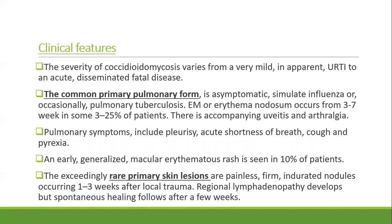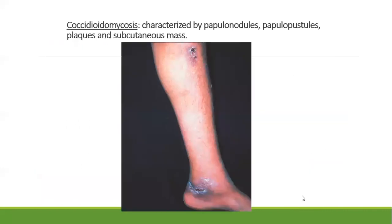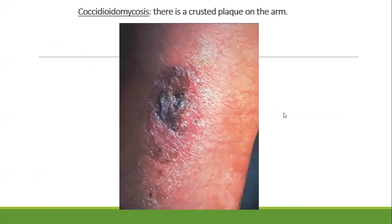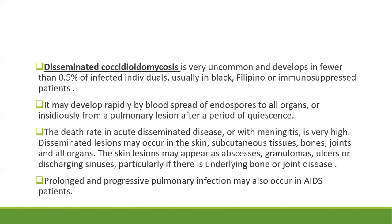The exceedingly rare primary skin lesion is a painless, firm, indurated nodule occurring one to three weeks after local trauma, with regional lymphadenopathy, but spontaneous healing occurs after a few weeks. Coccidioidomycosis is characterized by papulopustular lesions or subcutaneous masses with crusted plaques. Disseminated coccidioidomycosis is very uncommon, developing in fewer than 0.5 percent of infected individuals, usually in Black, Filipino, and immunosuppressed patients.